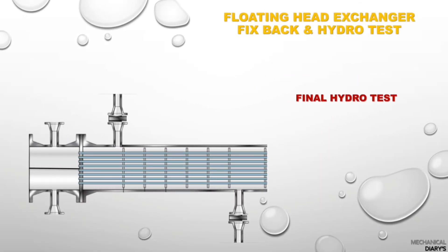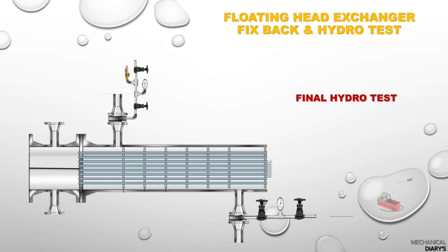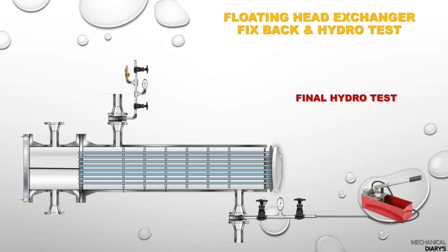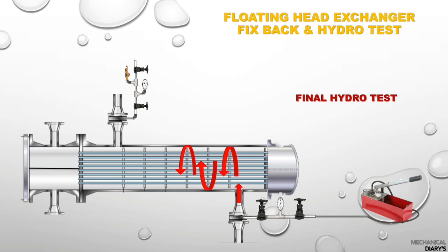If inspection finds no leak or pressure drop, proceed to the final hydrotest. For the final hydrotest, just fix the shell back cover and pressurize from the shell side. Once the pressure holds, you do not need to call inspection, because the final test is for maintenance and operation records.